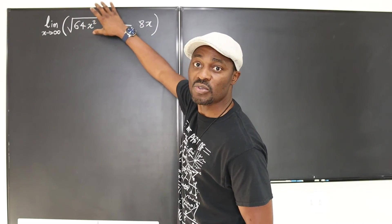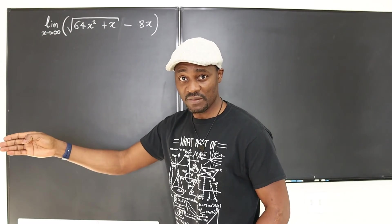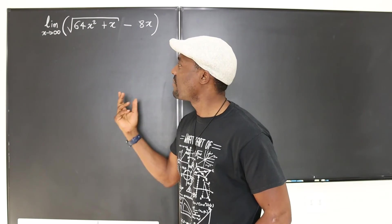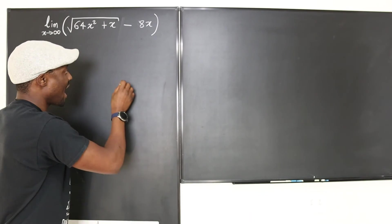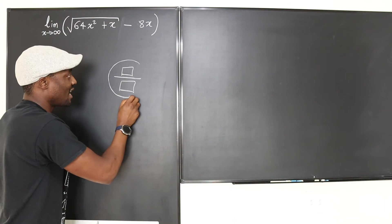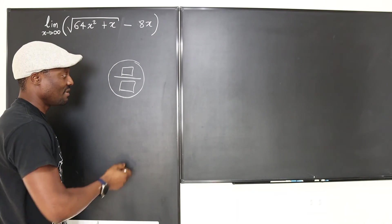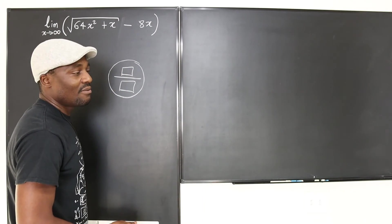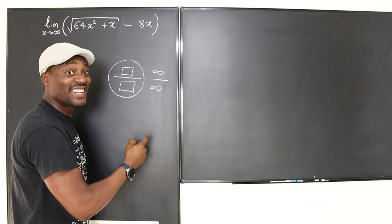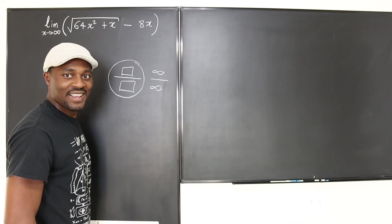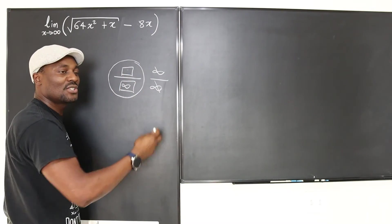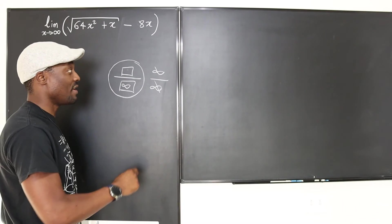Whenever you see two terms like this — one being subtracted from the other, and both going to infinity as x goes to infinity — you don't want to arrive at an indeterminate answer. You want to create rational terms, or at least make a fraction out of it. If you make a fraction where the denominator is the only thing going to infinity, the entire expression will become zero — because infinity is so large that whatever it divides, as long as it's not another infinity, the result is zero. You want finite over infinity.